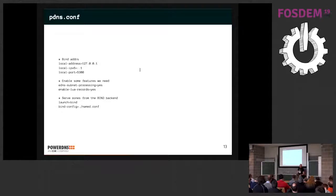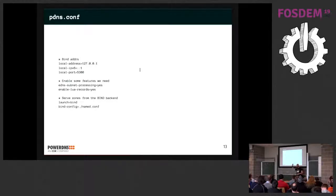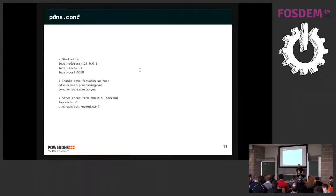Here is how you configure this — this is actually a working pdns.conf. You bind to a few ports, turn on EDNS subnet processing, and enable LUA records. They're disabled by default in 4.2 — for one, they're experimental, and two, there are some security concerns I'll get to later. In this case I'm running everything from a BIND backend because writing zone files is easy to show. LUA records can live within PowerDNS with any backend because they're just records.